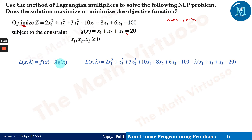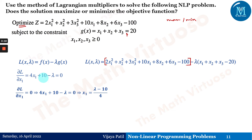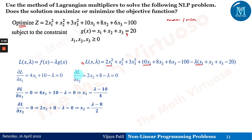So L(x, lambda) = f minus lambda times g(x). This can be written as the objective function f minus lambda times g, where g is x1 + x2 + x3 − 20. Now ∂L/∂x1 = 4x1 + 10 − lambda = 0. From this we get x1 = (lambda − 10) / 4.